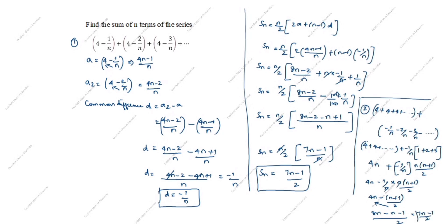Both methods give the same answer: Sn = (7n - 1)/2. The first method uses the standard AP sum formula, while the second method splits the series. You can follow whichever method is easiest for you. Thanks for watching this video.